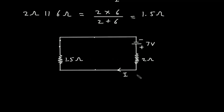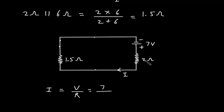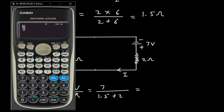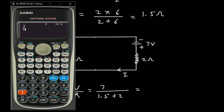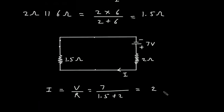From this circuit we can find the value of I using Ohm's law. I is equal to V divided by R. V is 7 volts, and R is 1.5 plus 2. So this will be 7 divided by 3.5, which is 2 amperes. This is the value of the total current.